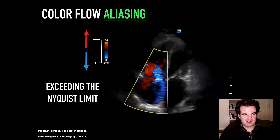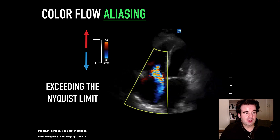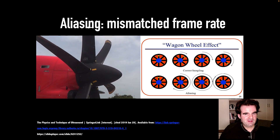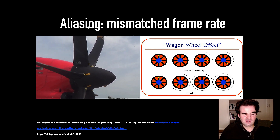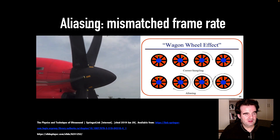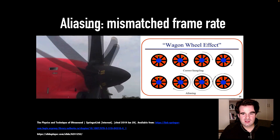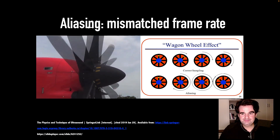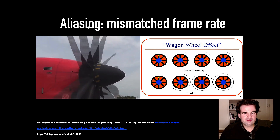A regurgitant lesion is very much like a stenotic lesion in reverse, where blood flow typically gets very fast as it squeezes through that tiny orifice. If this is still not making sense, think of a spinning propeller. Initially you'll be able to track the direction and even sense the frequency of that propeller, but at a certain point you'll lose track of it — eventually missing information — and your sampling will not be able to adequately understand the directionality and velocity. This is what happens when red cells are traveling too fast for the frame rate or the sampling frequency, which is matched to your Nyquist limit.